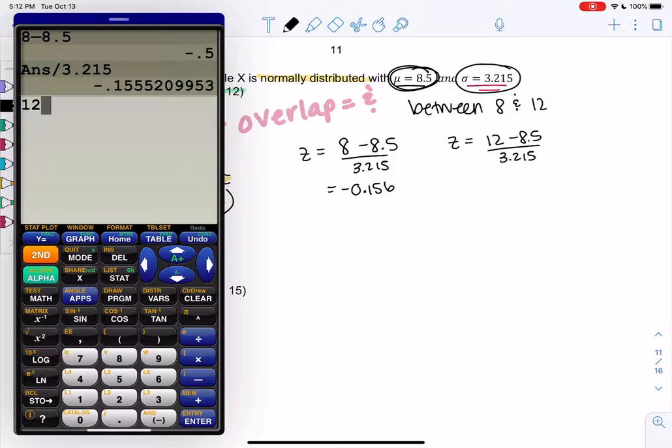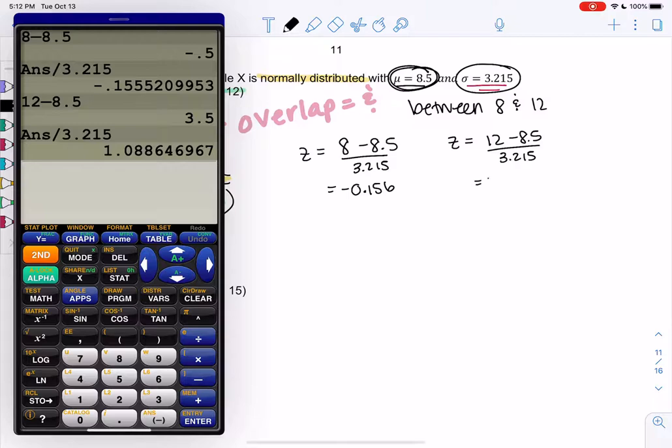And then 12 minus 8.5, enter, divide by 3.215. And we get a z-score of 1.089. And so now that we have z-scores, we can find the area or the probability by using normal CDF.